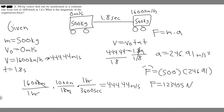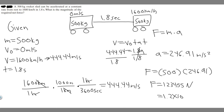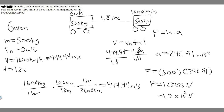The answer is 123,455 newtons, since we used kilograms and meters per second squared. Rounding to 120,000 and expressing in scientific notation — moving the decimal five places — gives 1.2 times 10 to the fifth newtons. That's the simplified answer; use whichever form your teacher prefers. Hopefully you found this video useful.